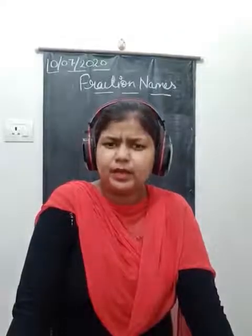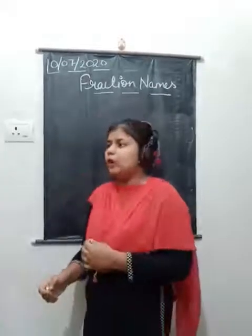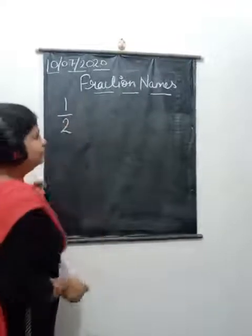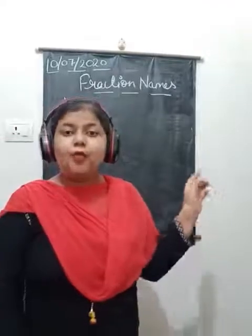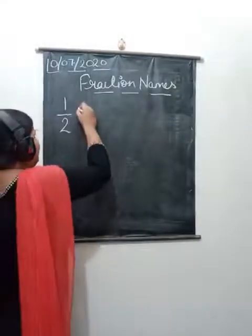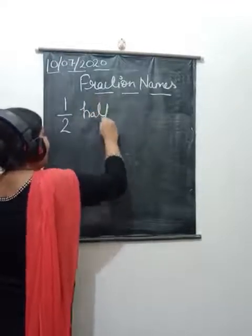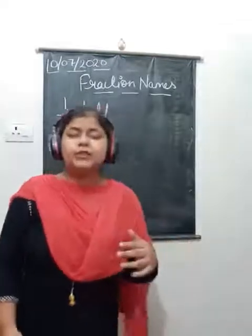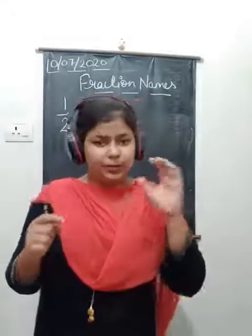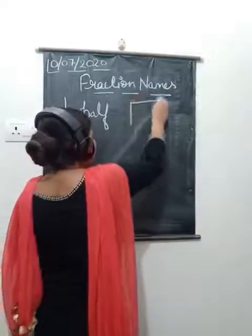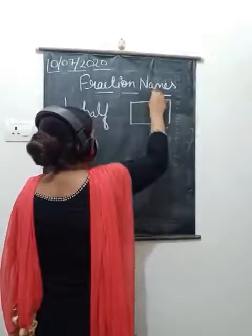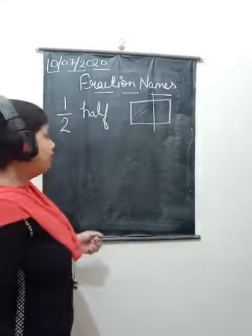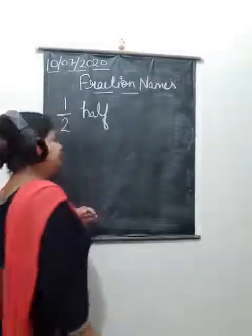In our last class I gave you a brief introduction about how we pronounce or call a fraction. For example, one upon two - we call it 'half'. One upon two means half, because if you take any figure and divide it into two parts and shade one part, that is one upon two, which means half.